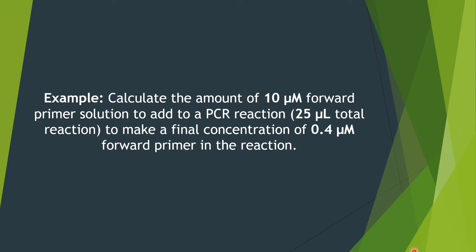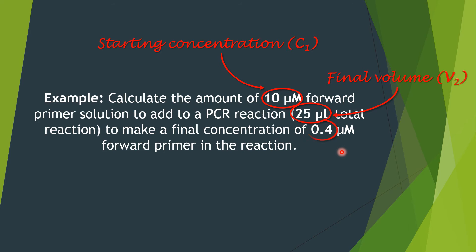Let's look at an example. Calculate the amount of 10 micromolar forward primer solution to add to a PCR reaction — a 25 microlitre total reaction volume — to make a final concentration of 0.4 micromolar forward primer. Breaking this down: we are asked to calculate the amount to add, so we're solving for the starting volume V1. The 10 micromolar is C1, the 25 microlitre total reaction volume is V2, and the 0.4 micromolar final concentration is C2.